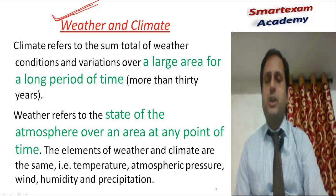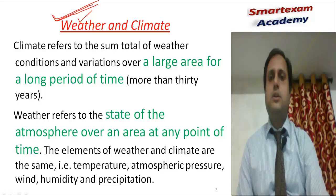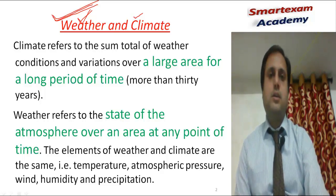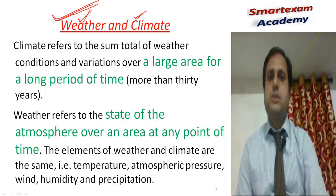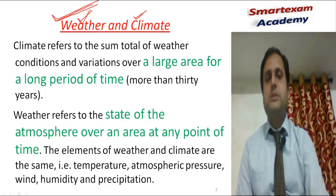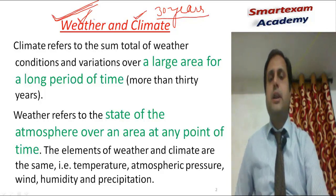If we differentiate between weather and climate, we can say that weather is a day-to-day changing matter. Climate means the atmospheric condition of a larger area for a long period of time. We can also say that climate is a broader concept and weather is a smaller concept. Climate refers to atmospheric conditions over a large area for a long period of time — more than 30 years.